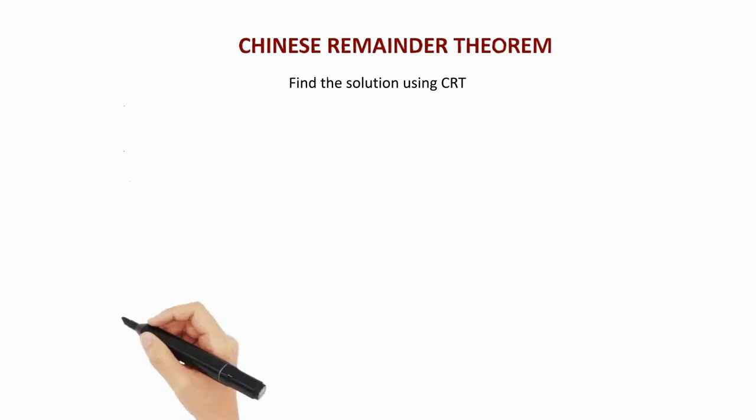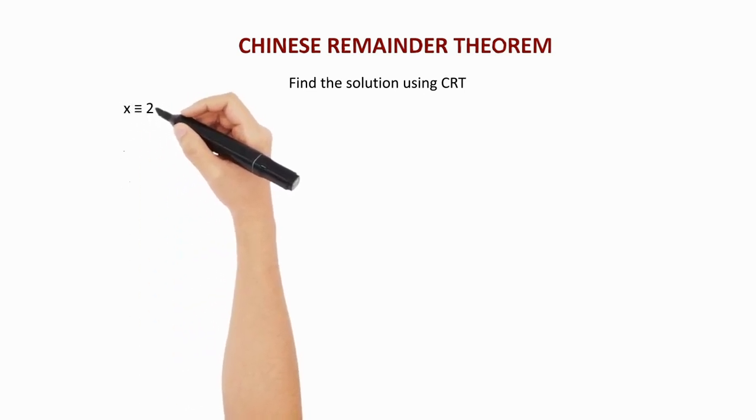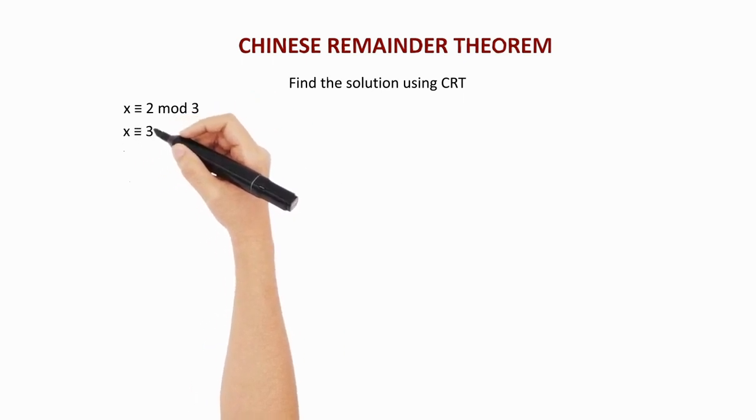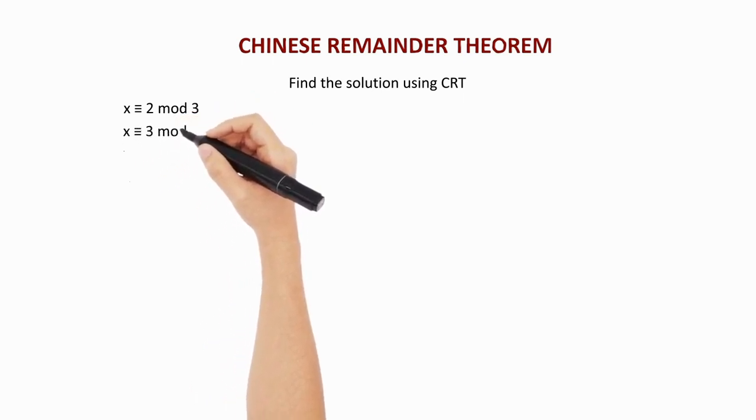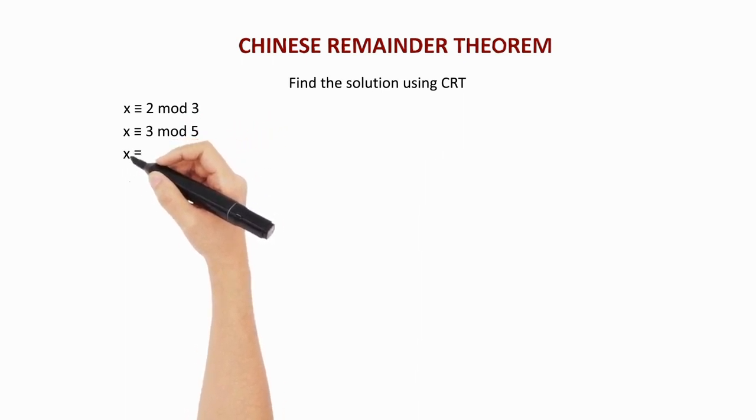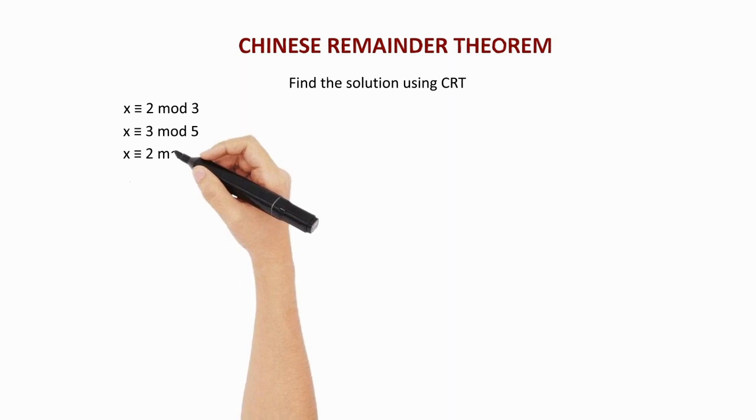The question is: x is congruent to 2 mod 3, x is congruent to 3 mod 5, and x is congruent to 2 mod 7.